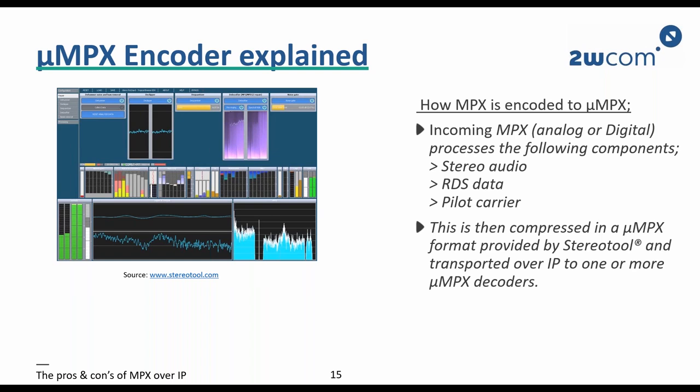How does micro-MPX offer this high quality at such a low bit rate? Unfortunately the compression method is a well-hidden secret from Stereotool. To give you an impression of how we believe it works: the micro-MPX encoder compresses stereo audio, RDS data and the pilot carrier into the micro-MPX format. We believe that the audio component, which takes up most of the bandwidth, is compressed in a manner similar to MP3.